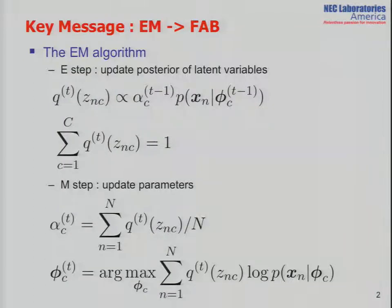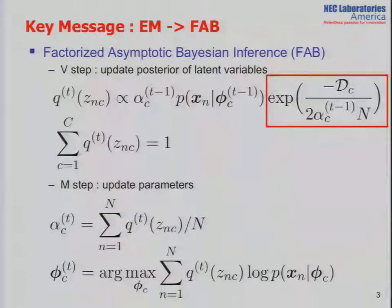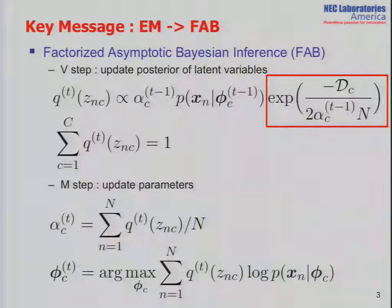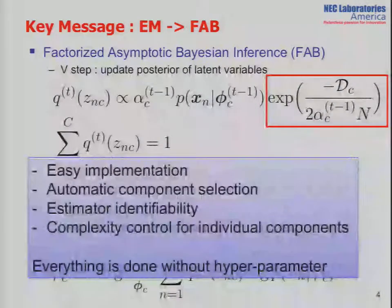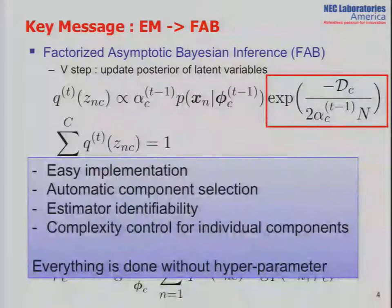If you are interested in model selection for mixture models, we propose to add this term in the E-step. We call this procedure Factorized Asymptotic Bayesian inference, FAB. This procedure provides several desirable properties, like being very easy to implement — just add one term to the EM algorithm.